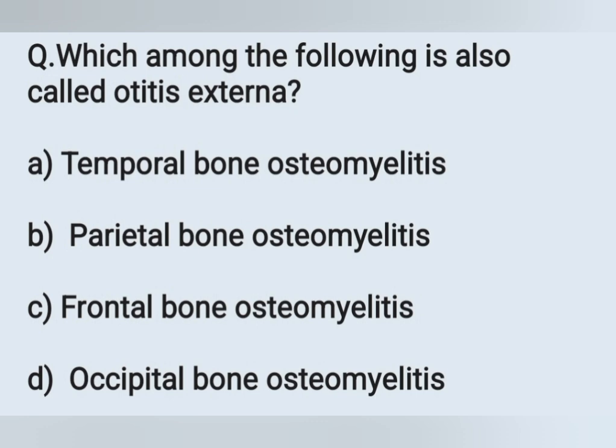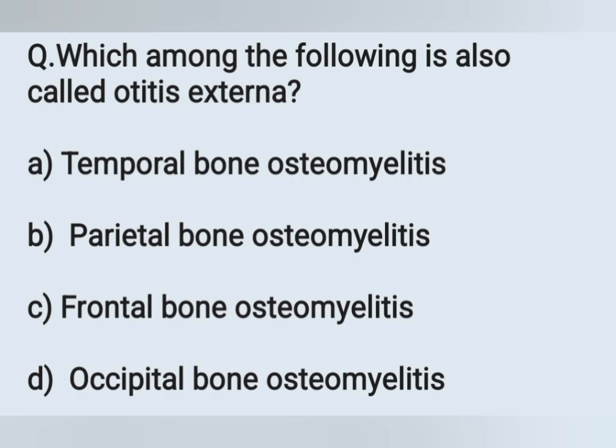The next question: Which among the following is also called otitis externa? Option A: temporal bone osteomyelitis, Option B: palatal bone osteomyelitis, Option C: frontal bone osteomyelitis, Option D: occipital bone osteomyelitis. Otitis externa is also called temporal bone osteomyelitis. Option A is the correct answer.